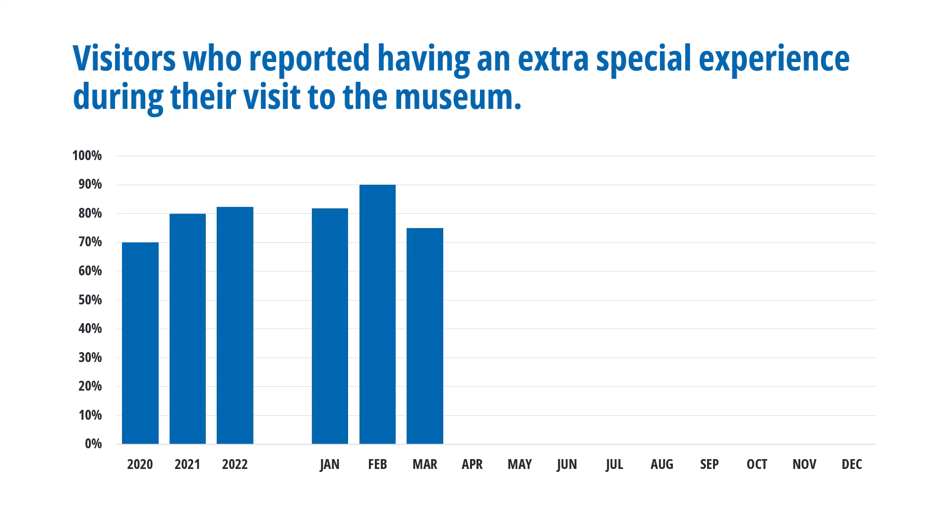I only have January, February, and March data so far, so the rest of the months are still yet to go. Now there's no problem in visualizing your data in a tracking chart like this — it's totally perfect and it looks great. But the thing is you might have a lot of these types of tracking charts to report, and so it can be kind of monotonous to do the same column chart or bar chart over and over again.